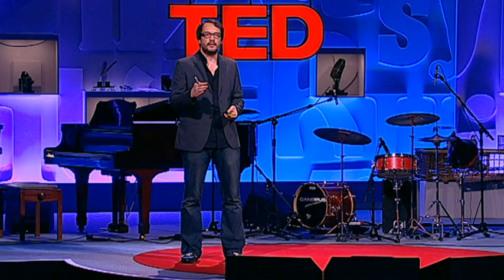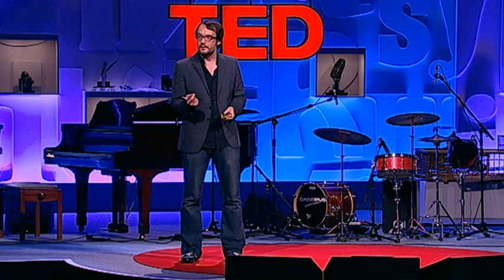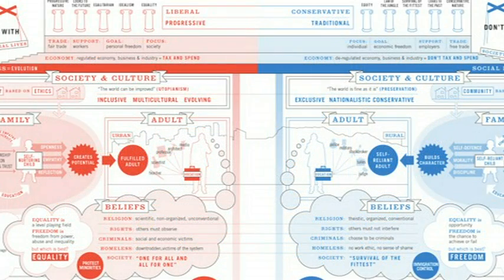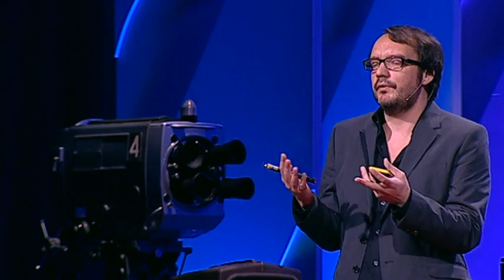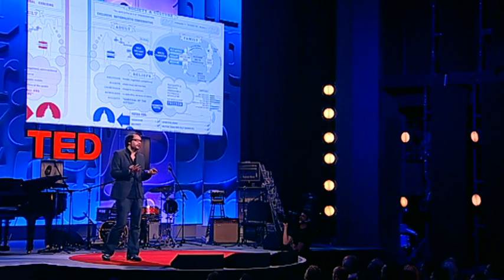But it can go beyond data, beyond numbers. I like to apply information visualization to ideas and concepts. This is a visualization of the political spectrum — an attempt to understand how it works, and how the ideas percolate down from government into society and culture, into families, into individuals, into their beliefs, and then back around again in a cycle. What I love about this image is it's made up of concepts — it explores our worldviews, and it helps me to see what others think and where they're coming from.